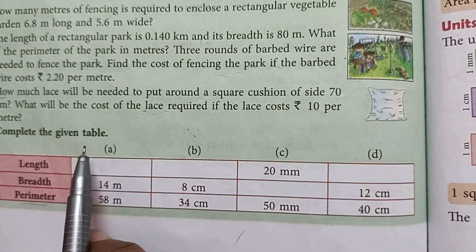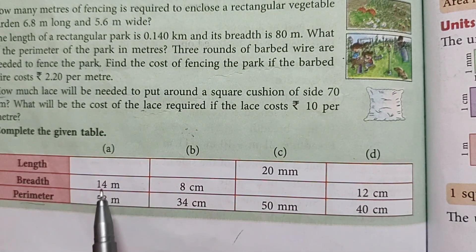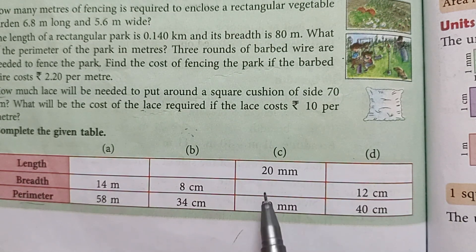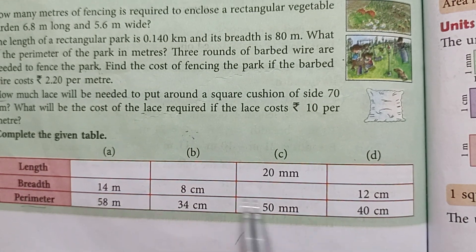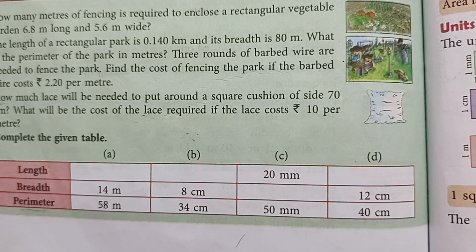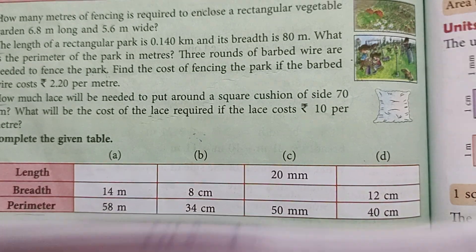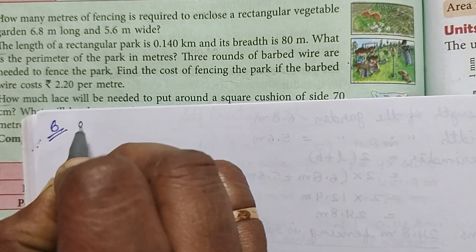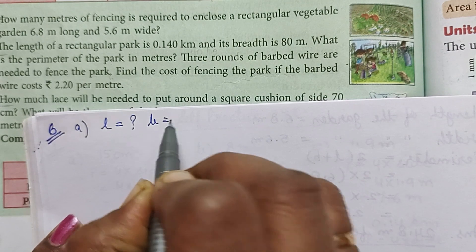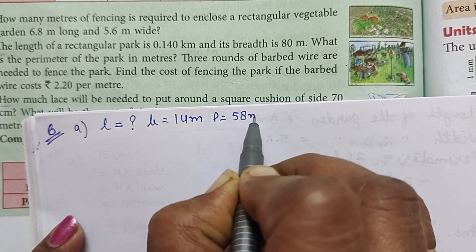Complete the given table. Here we have some lengths missing and some breadths missing. We need to find out all the parameters. Question number 6, part A: length is not given, breadth is 14 meters, and perimeter is 58 meters.